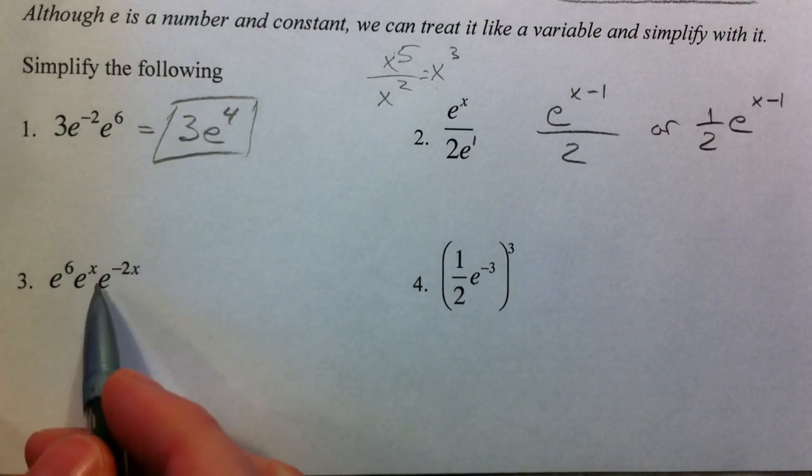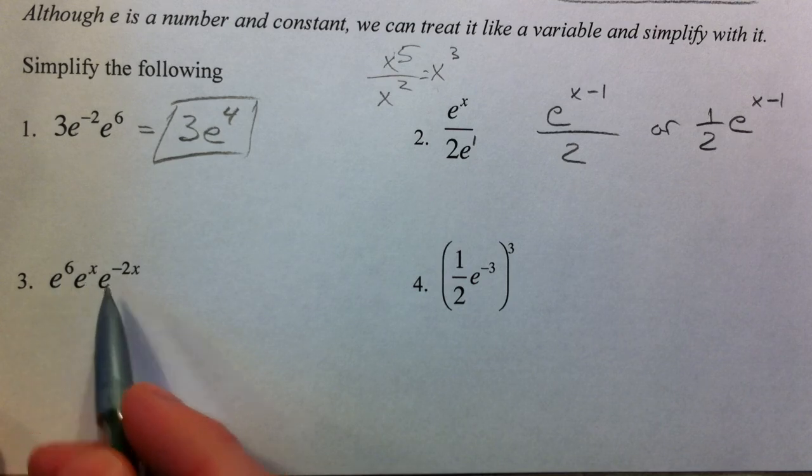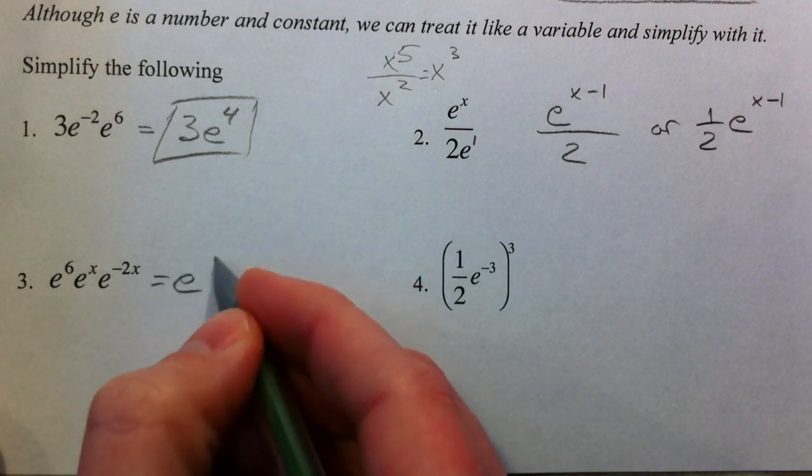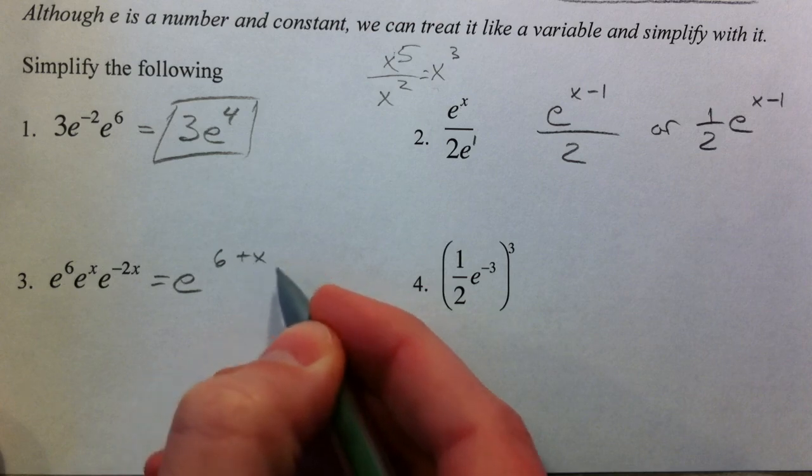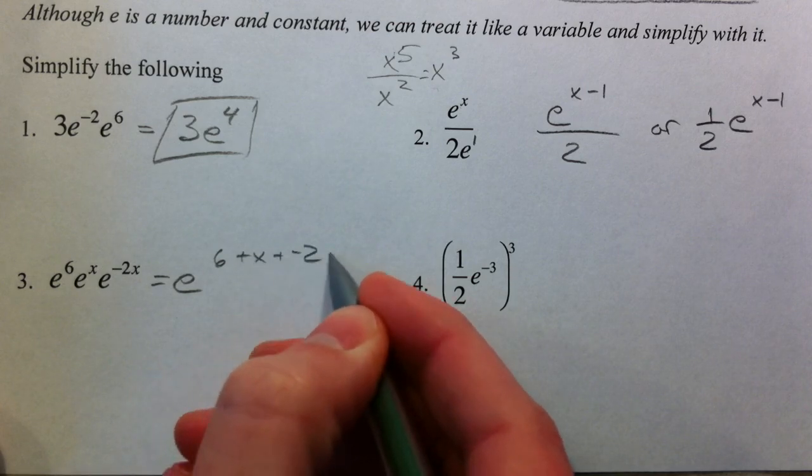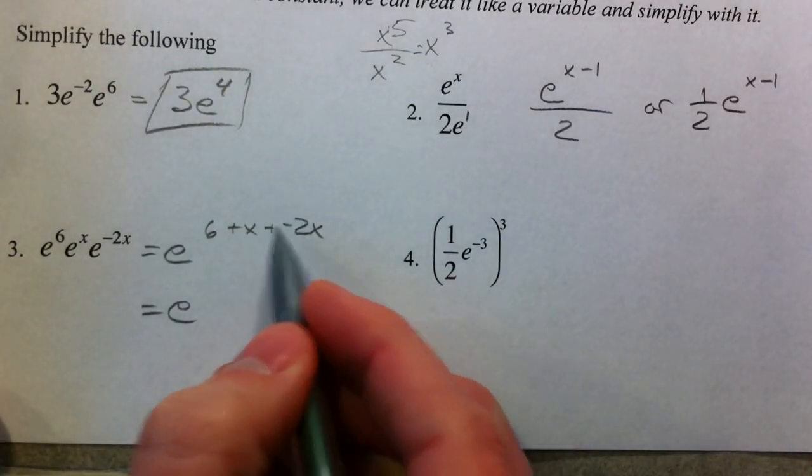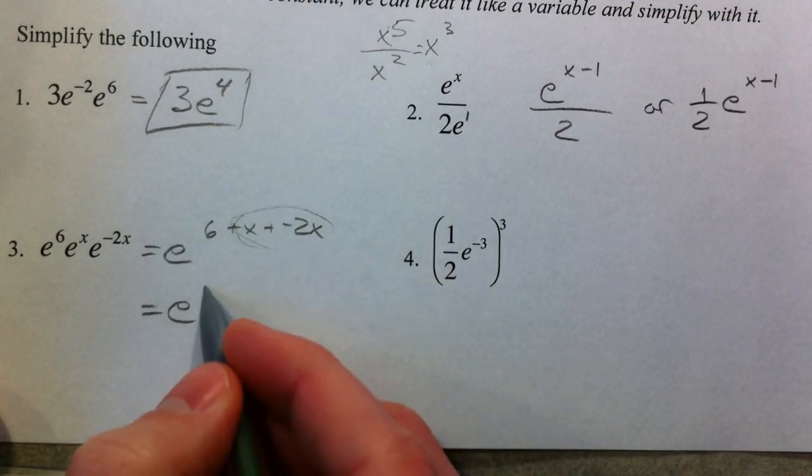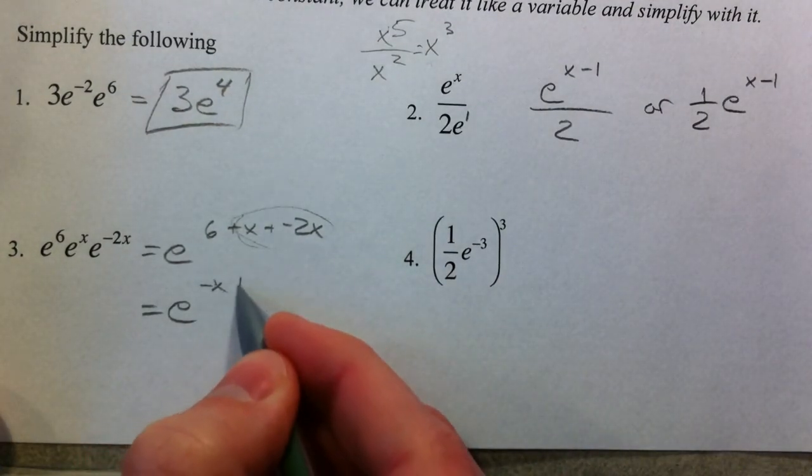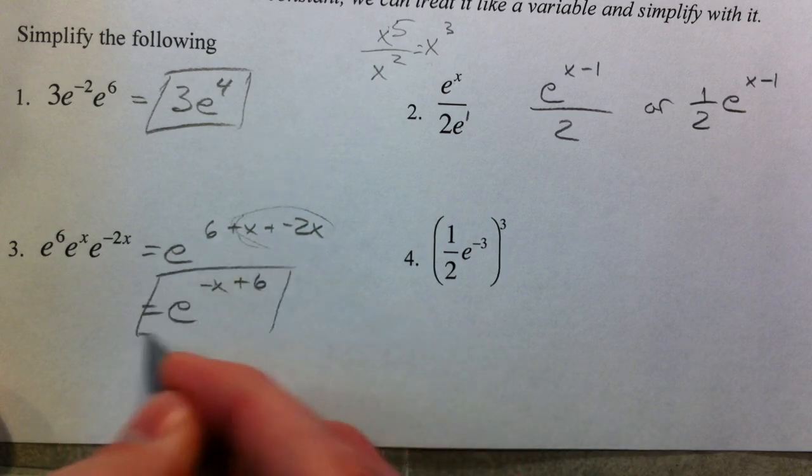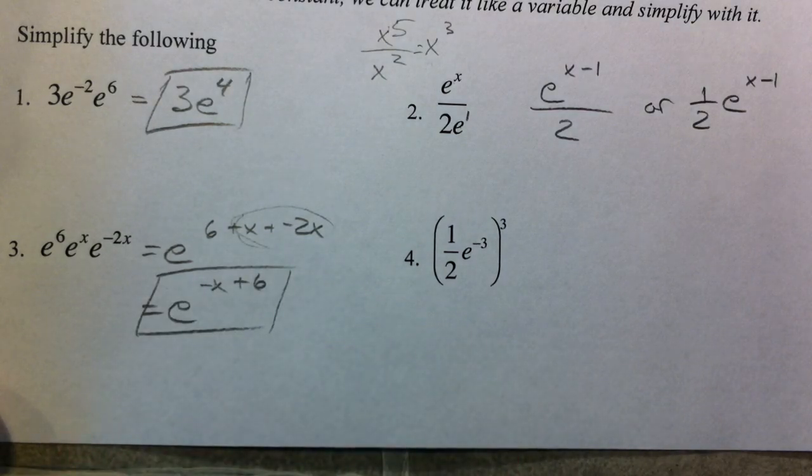More adding of exponents here, because all the bases are the same. And so we have E to the sixth plus X plus a negative 2X. And so we have E to the negative X, when you combine those two together, plus 6. Or you could write 6 minus X. It really makes no difference.